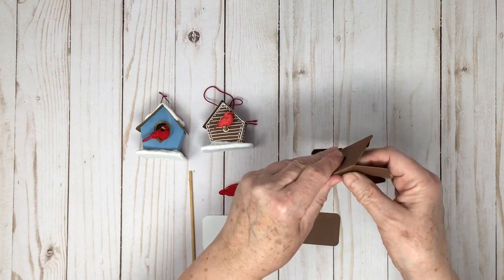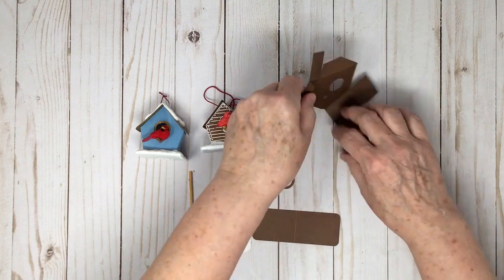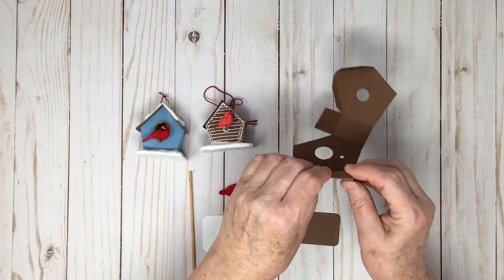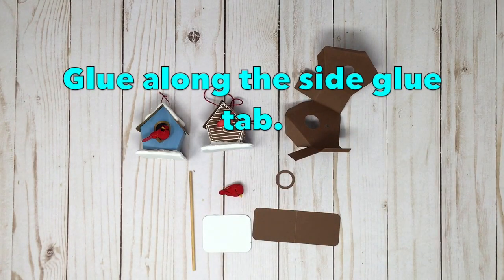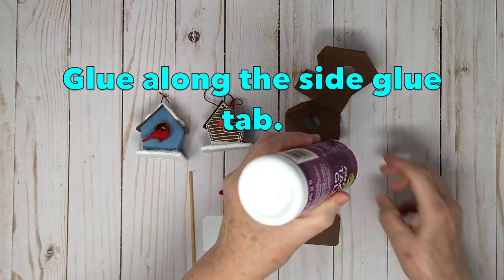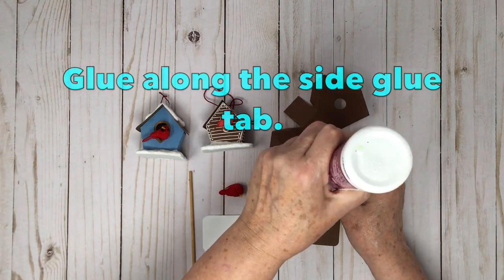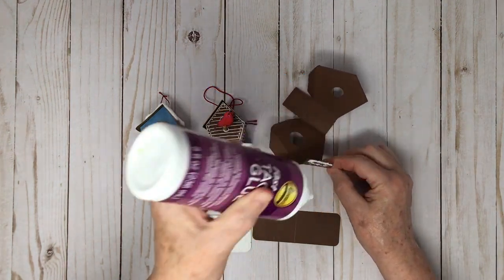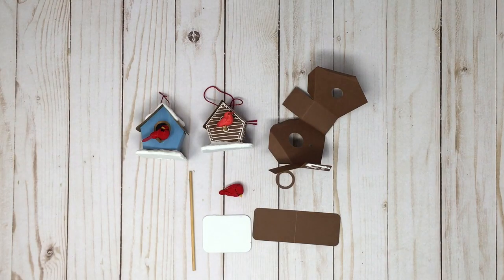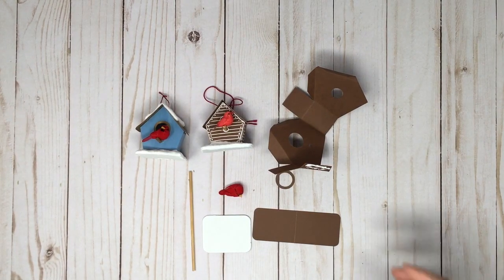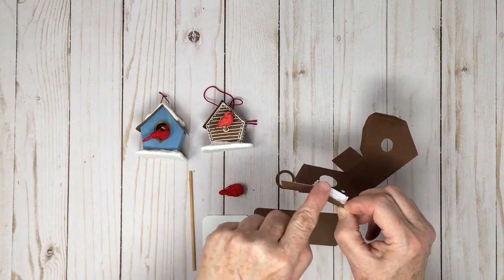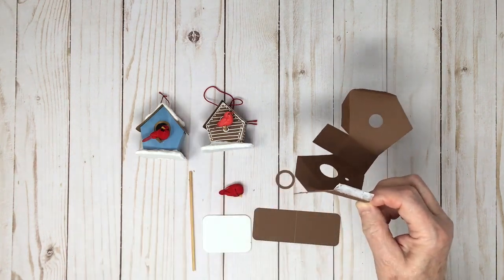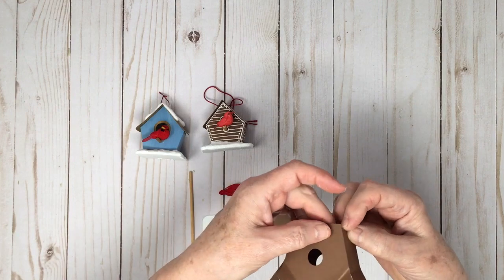There's one main glue tab for the body of the birdhouse. I'm going to use some glue, it's my favorite glue, Aileen's Fast Grab, but you can use any kind of white glue. You could even use tape if you want, like scrapbooking tape on a roll.